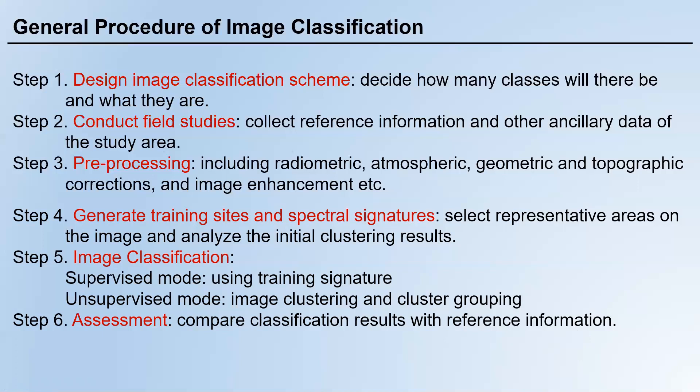Step six is assessment: compare classification results with reference information such as NLCD. For example, if a specific pixel is classified as vegetation, you can find its geographic location in the real world, locate it in the NLCD dataset, and check whether the NLCD result is consistent with your classification result.